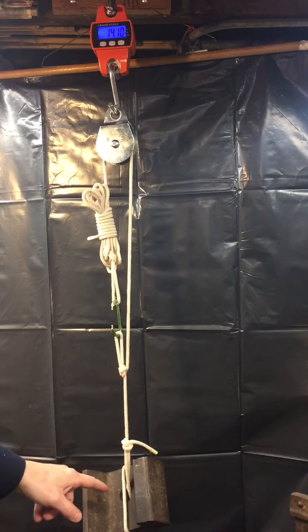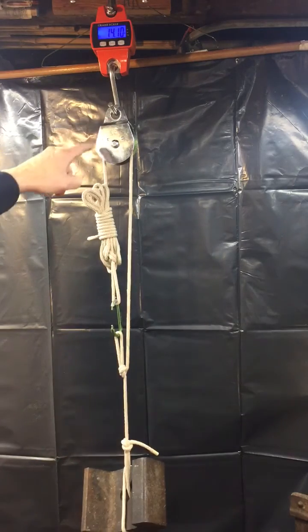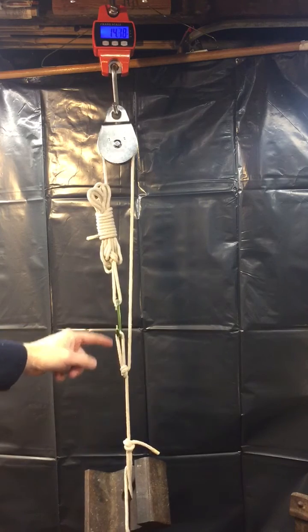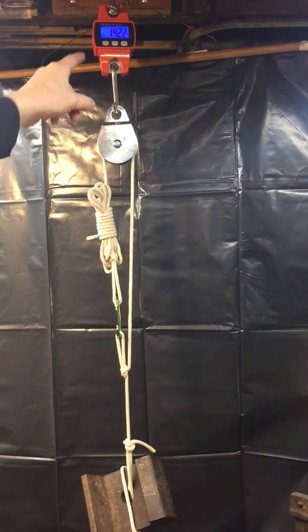Right now, I have a piece of railroad track hanging on a line that goes around the pulley, back down, it's tied off to a knot and a carabiner that has everything hanging straight on that scale, and it reads 14 pounds, just over 14 pounds. Right now it says 14.22.